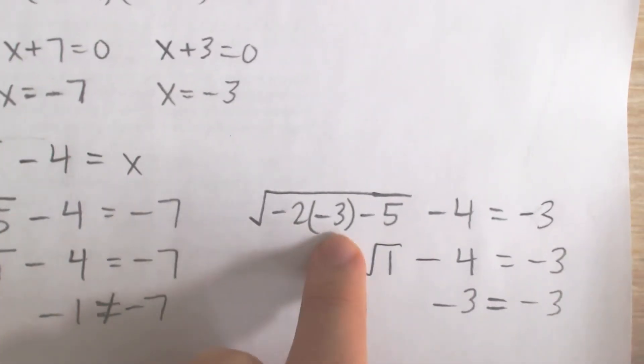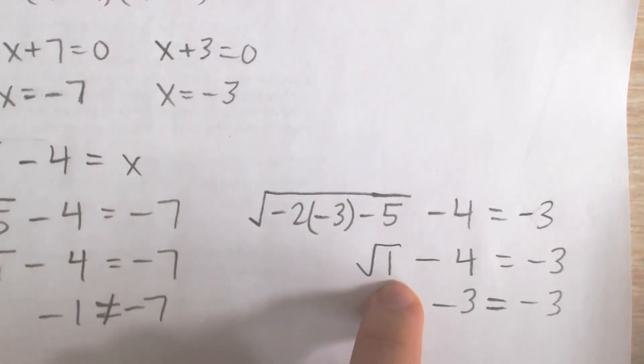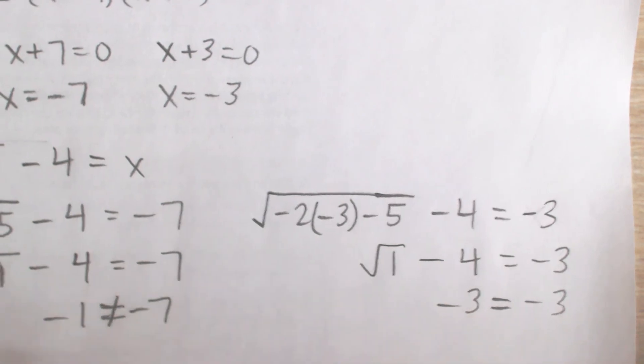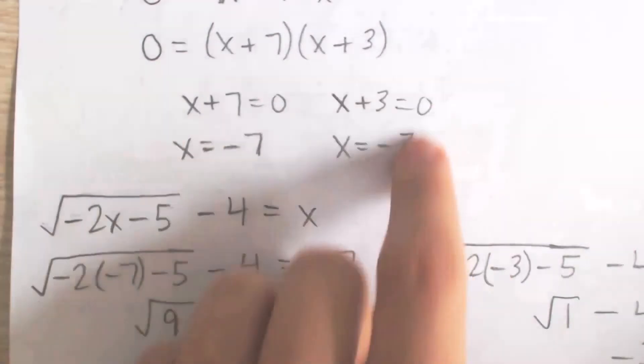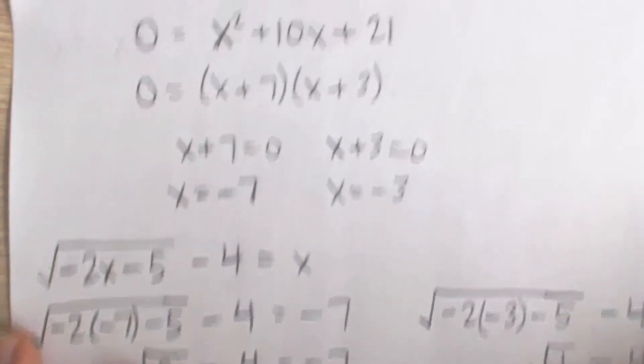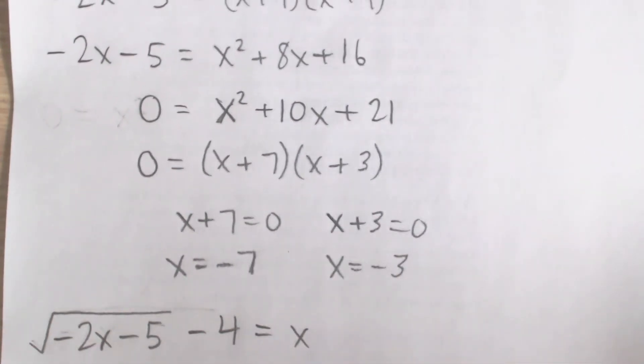If we take a look at the other one, plug in x equals negative 3. Here we have negative 2 times negative 3, that's positive 6. Minus 5 is 1. Square root of 1 is 1. So 1 minus 4 is negative 3. And that is indeed equal to x, which is negative 3. So negative 3 is indeed a solution. So our only actual solution to this equation is x equals negative 3.